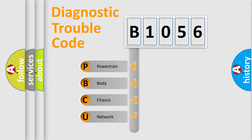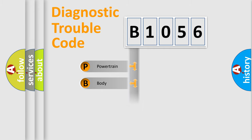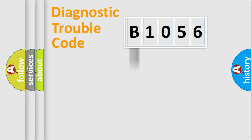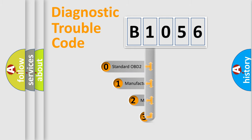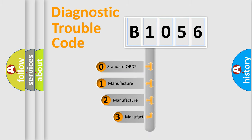We divide the electric system of an automobile into four basic units: powertrain, body, chassis, and network. This distribution is defined in the first character of the code.